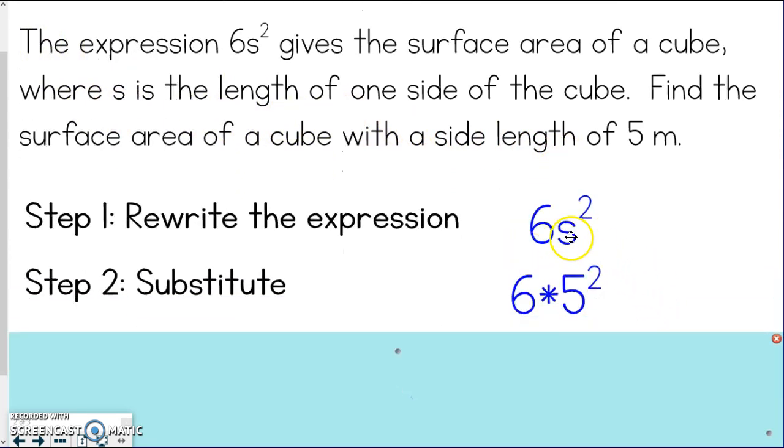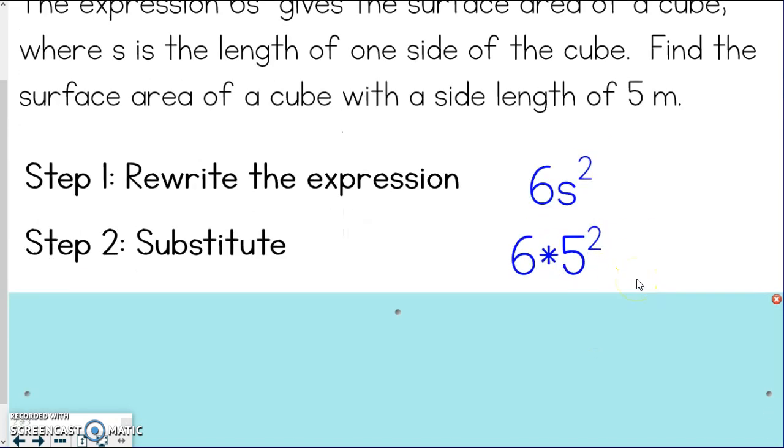When a number is next to the variable, even though it has this exponent, it still means multiplication. So we're going to write this as 6 times 5 squared, or 5 to the second power.